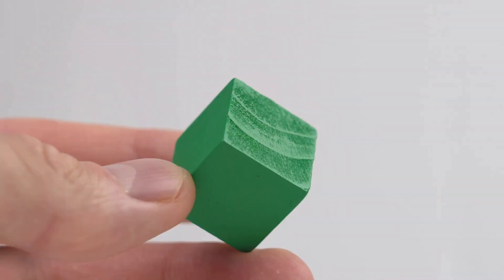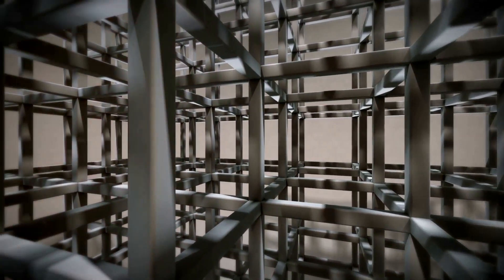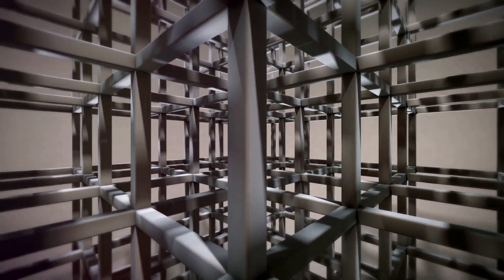All right, so you know a cube, right? It's got six faces, each a square. Now imagine if you could move in a direction you've never seen before. That's the fourth dimension. In 3D, a cube is all about length, width and height.